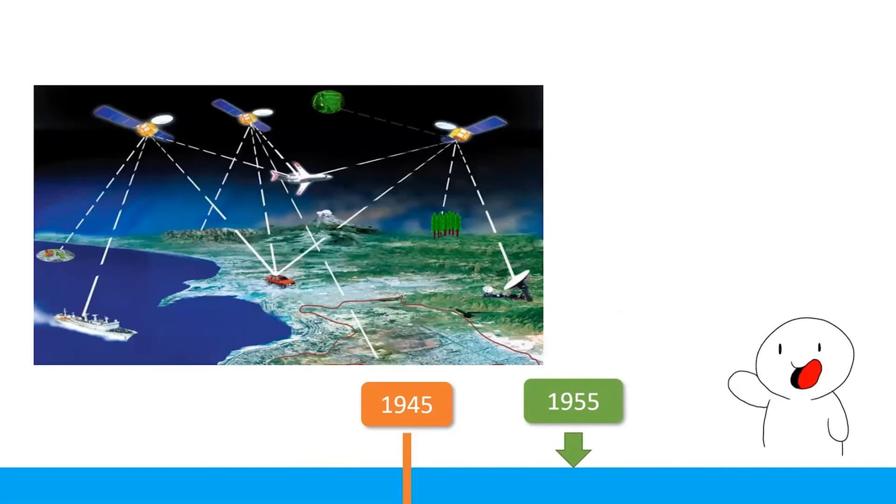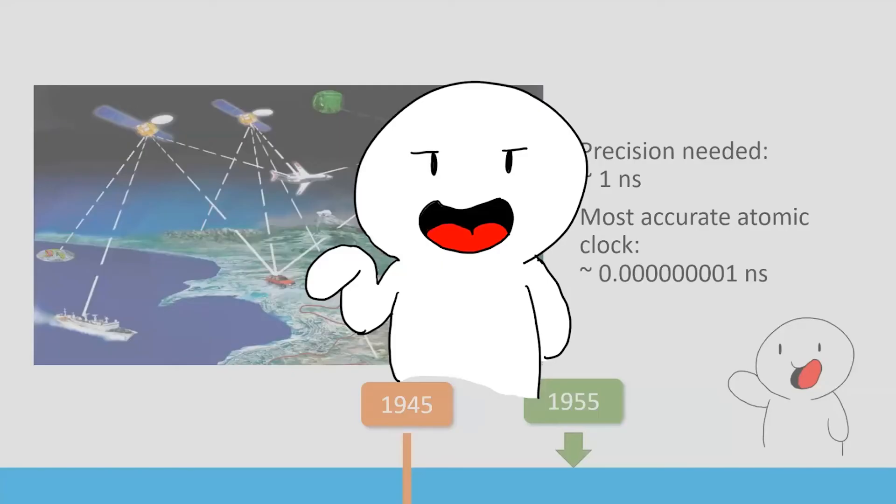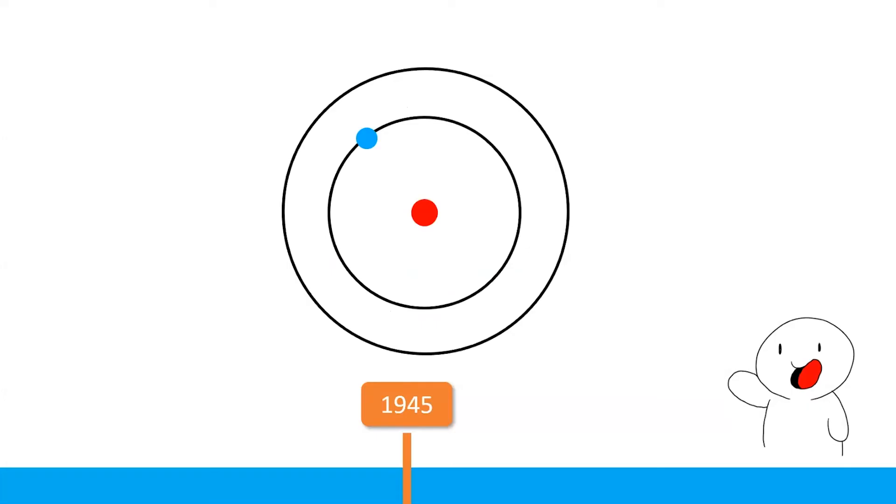Then you ask, where do we use such accurate timing? Well, in GPS. In order for GPS to know accurately where you are, it needs to be very precise in time. In fact, it has to be so precise that it is measured in nanoseconds. If the precision is off, then GPS may actually think that you are in the bottom of the ocean right now as we speak. But compared to the most accurate atomic clock we have right now, this is actually just child's play. Of course, those of you who are well-versed in general relativity, we know that GPS also involves some ideas from special relativity in order for it to work properly. But that's the story for another time.